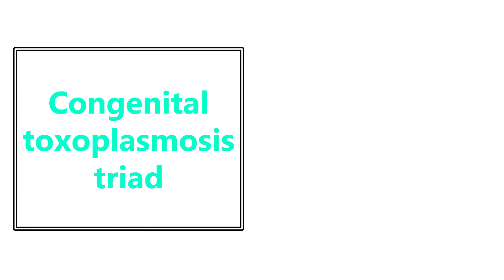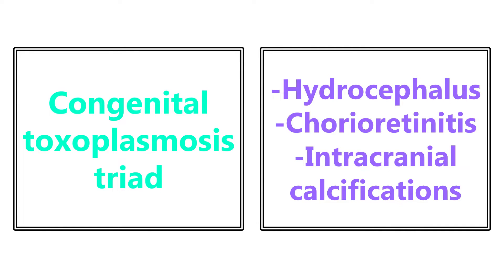The congenital toxoplasmosis triad is hydrocephalus, chorioretinitis, and intracranial calcifications — very high yield to know. If they give you a CT scan of the brain showing rim-enhancing lesions in multiple areas, think congenital toxoplasmosis.